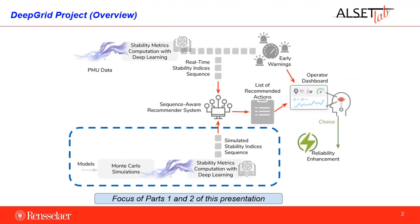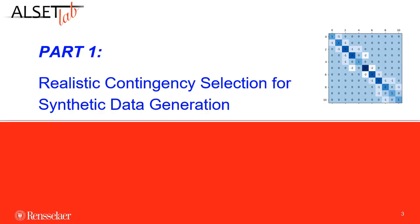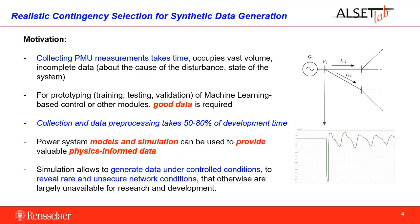In the Deep Grid project, machine learning aims to help operators with decision making using available data about the power system. The project aims to develop a recommender system that would recommend to operators which action to take. Since a recommender system is a machine learning model that has to be trained using a lot of data, the remainder of this presentation will focus on data generation. The key is to combine measurements and simulations for training a machine learning model. Machine learning algorithms won't perform well if the data is not good.